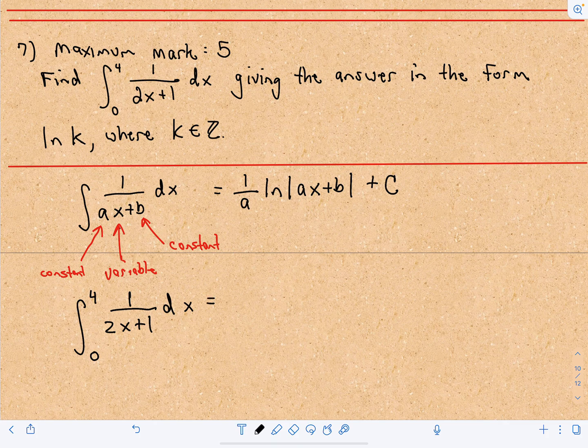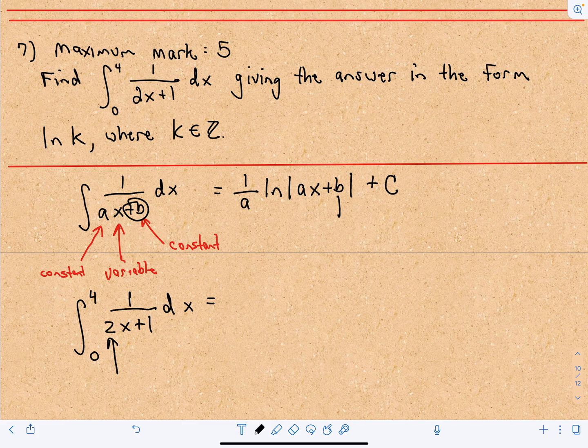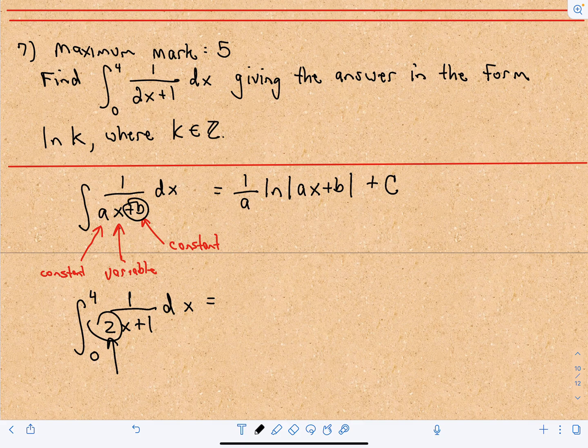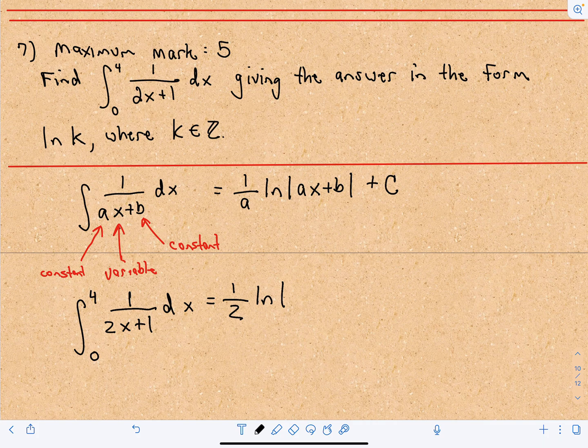When we compute this antiderivative, 2 is our a value. Notice the b value doesn't really pop up except in the argument. The a value gets pulled out front as 1 over a. So 2 is our a value. In this case, we'll get 1 over 2, and then we'll have the natural logarithm of basically just what's underneath here,